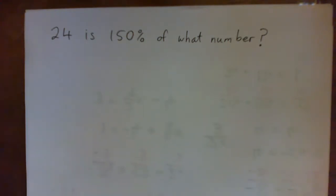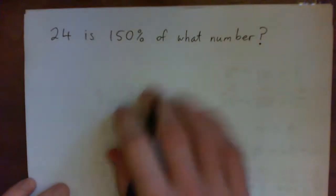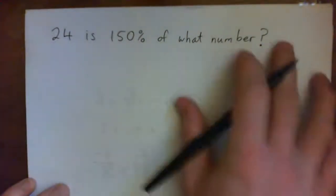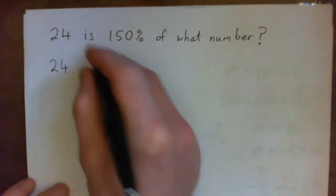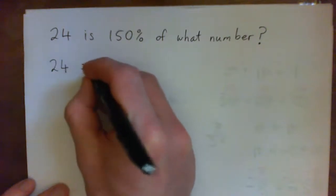Okay, so there's a number of ways of doing this. One way is I'm going to turn this sentence into an equation. So we're going to write 24 and in place of is we're going to put equals.